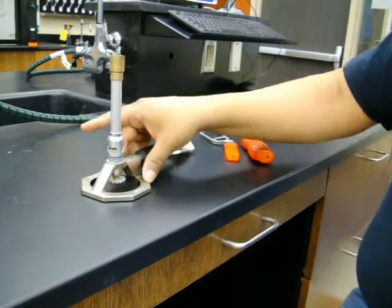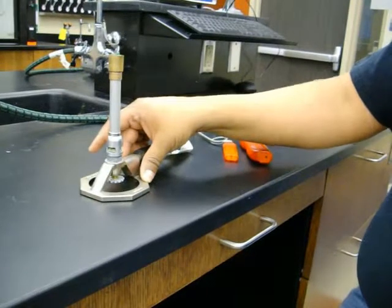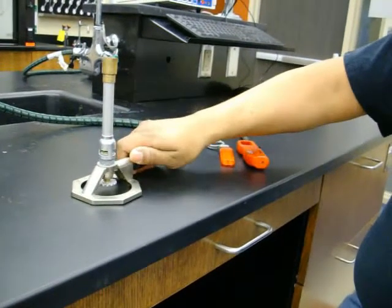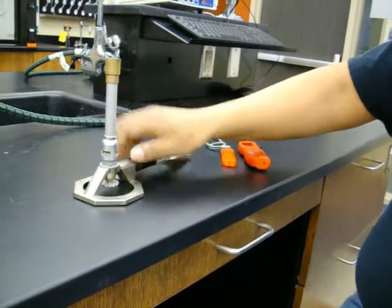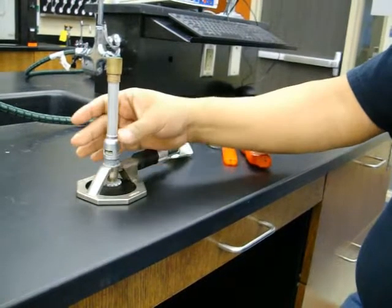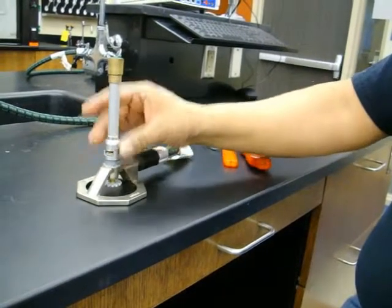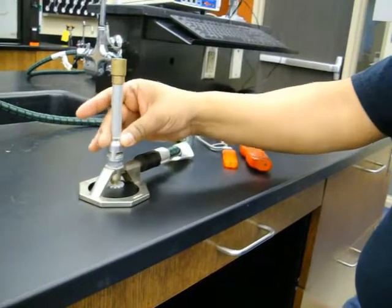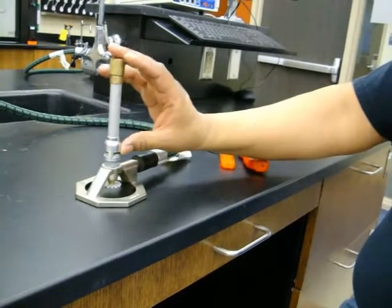A base or stand that prevents the burner from toppling, gas intake where the hose is attached, gas valve that regulates the flow of the gas, a collar that contains the air hole, air holes that regulate the amount of oxygen intake, and a barrel approximately 5 inches long.